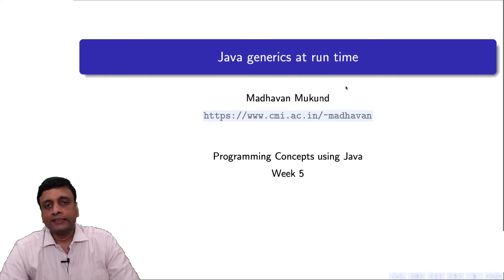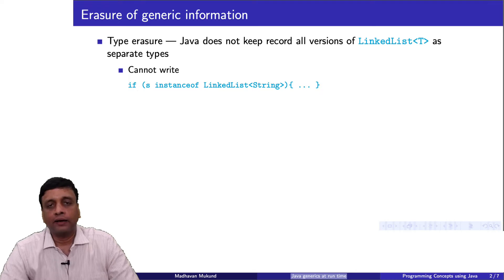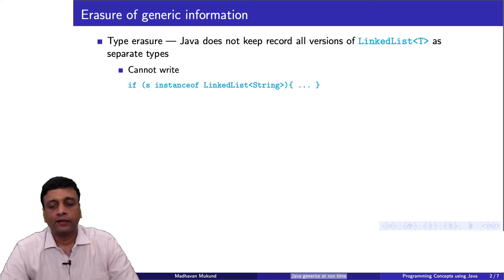Let us come back to Java generics and try to understand how Java generics work at runtime. One important fact about Java generics is that Java does not keep track of the type at runtime. We saw earlier that there is no compatibility maintained between different instantiations of the type — these are not covariant. So if I have a linked list of object, it is not a supertype of a linked list of string. In fact, it is more serious than that: Java does not actually remember the type parameter at runtime.